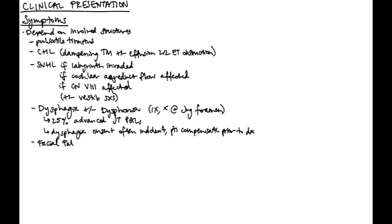Facial nerve, cranial nerve 7, can be affected at the level of the middle ear, the mastoid, the IAC, cerebellopontine angle, or the stylomastoid foramen, depending on where the paraganglioma is living. Facial palsy happens in about 15% of patients with advanced or FISH class C and D jugulotympanic paragangliomas.